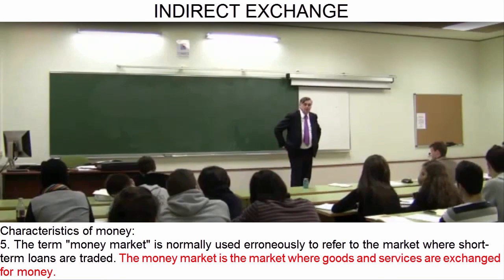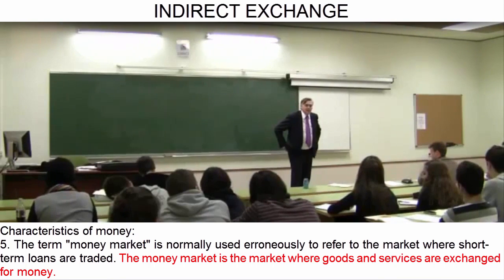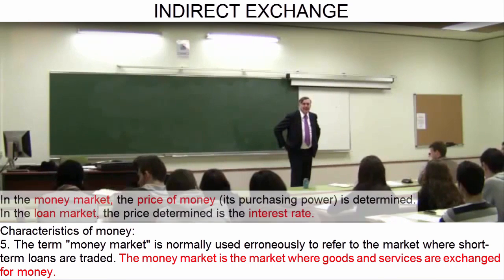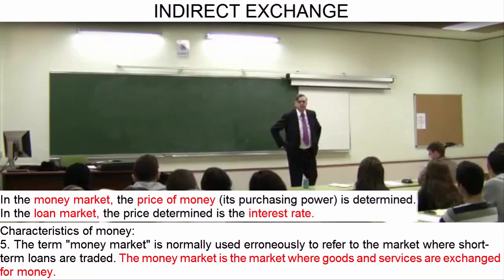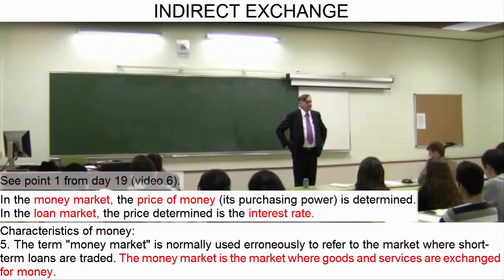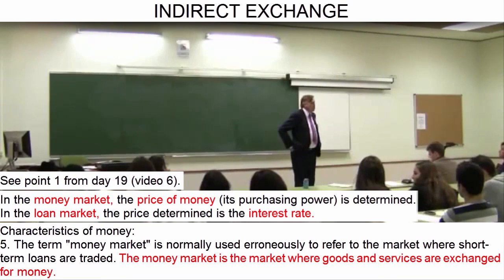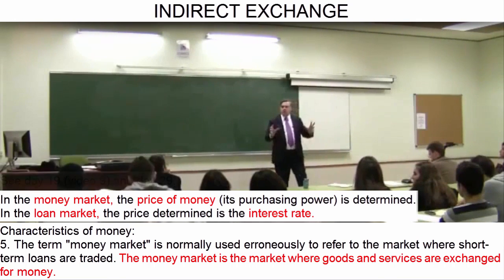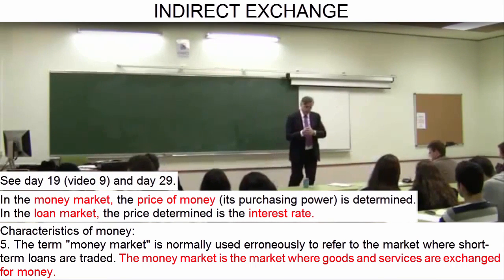Therefore, it is terribly misleading to refer to the money market if one wishes to talk about the short-term loan market. Because in the loan market, the price that is determined is the interest rate, and the interest rate has nothing to do with the price of money — nothing at all. The price of money is its purchasing power. And here lies what truly does disrupt society, as we will see right away.